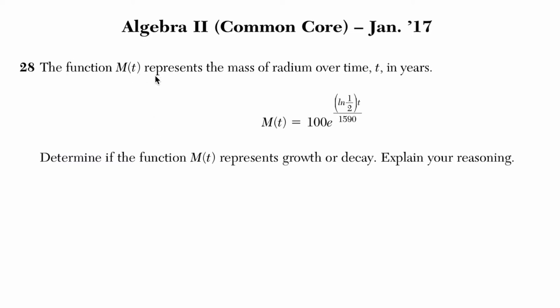We're told that the function M(t) represents the mass of radium over time t in years. So what you have right here is a half-life equation. And it tells us to determine if the function M(t) represents growth or decay. Explain your reasoning.